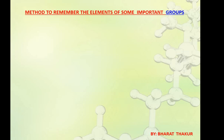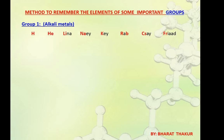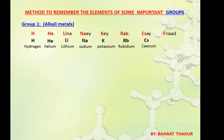I am giving some funny shortcuts to learn the groups and periods. For group 1, that is alkali metals, the shortcut is 'Halina ne ki Rab se Friya'. Where 'Ha' indicates Hydrogen, 'Lina' indicates Lithium, 'Ne' indicates Sodium, 'Ki' indicates Potassium, 'Rab' indicates Rubidium, 'Se' indicates Cesium and 'Friya' indicates Francium. By learning this line we will be able to arrange the elements of group 1 in exact order.